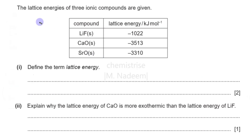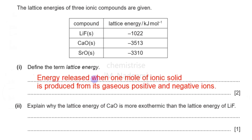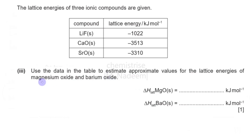In this question we have some lattice energies of three ionic compounds. First, define lattice energy: it is the energy released when one mole of an ionic compound is produced from its gaseous ions. Next, why is the lattice energy of calcium oxide more exothermic than that of lithium fluoride? Calcium is 2+ and oxide is 2−, while lithium is 1+ and fluoride is 1−. The Ca²⁺ and O²⁻ ions have stronger attraction because their charges are larger, giving greater charge density and a more negative lattice energy.